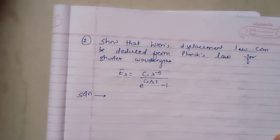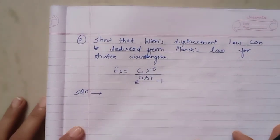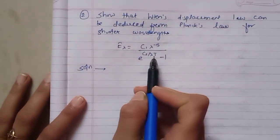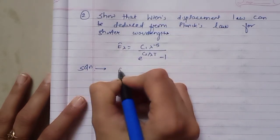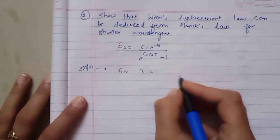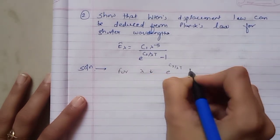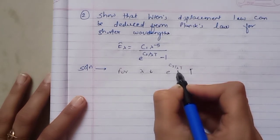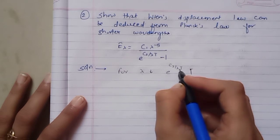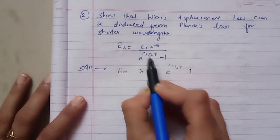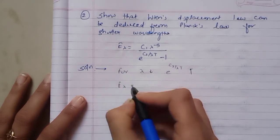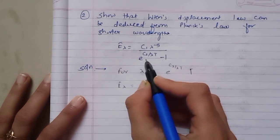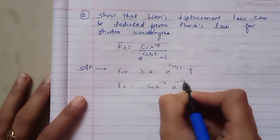Now let's check the second one — Wien's displacement law. We have to show that we can reduce Wien's displacement law from Planck's law for shorter wavelengths. For very short wavelengths, lambda is very small, so C2 upon lambda T will be very large, and e raised to C2 upon lambda T will be very, very large. So we can neglect 1 as compared to e raised to C2 upon lambda T.